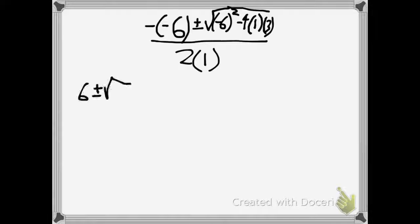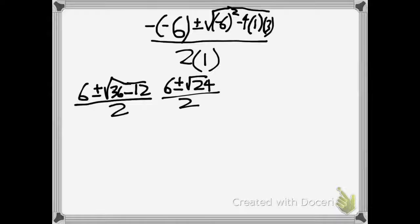Now we plug that in and we simplify it down to 6 plus or minus 36 minus 12 over 2. Let's just simplify that down to 6 plus or minus the square root of 24 over 2. Now 24 can be simplified.